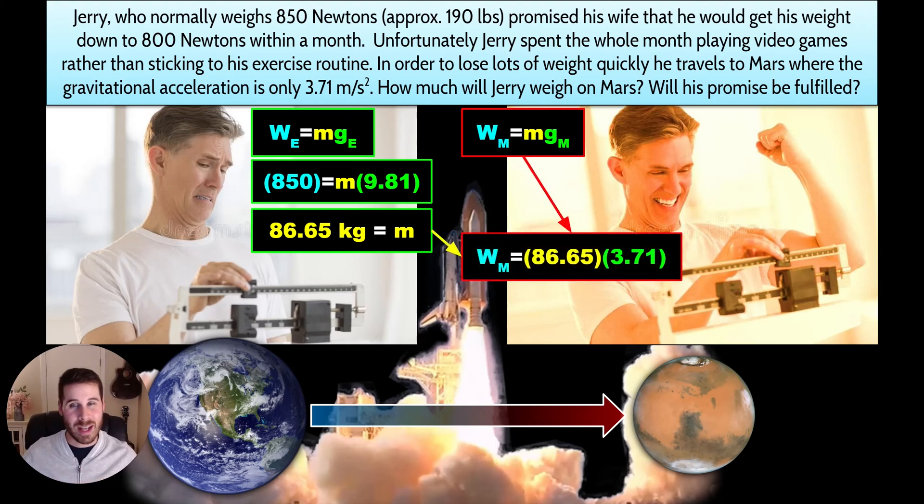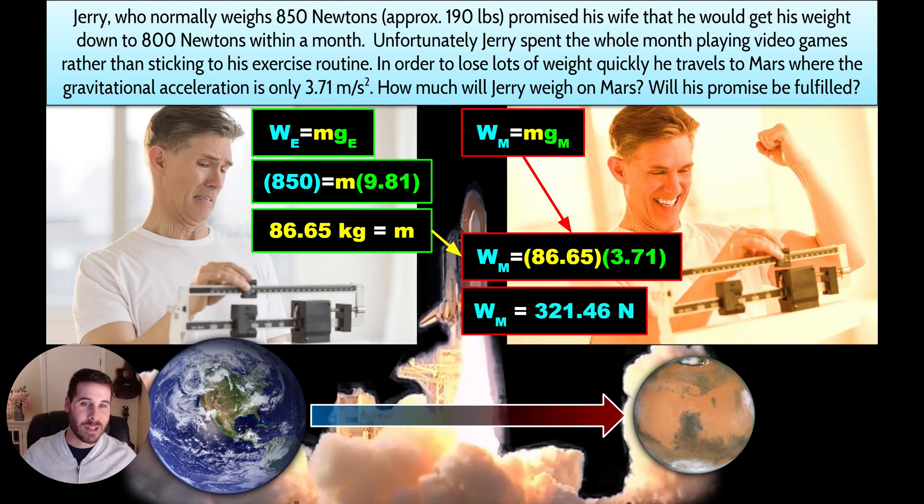Let's plug in the number that we just got in step one, which was his 86.65 kilograms of mass. And let's multiply it by gravity on Mars, which was given in the question as 3.71 meters per second squared. Multiplying those two numbers, we get an answer of 321.46 newtons is his weight on Mars.